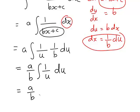The integral of 1 on u is just the natural log of the absolute value of u plus a constant. Normally we would call the constant c, but I'll call it another name, k, since we already had a c in our original expression. So a divided by b times natural log of absolute value of u plus arbitrary constant k.